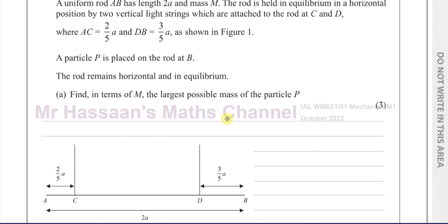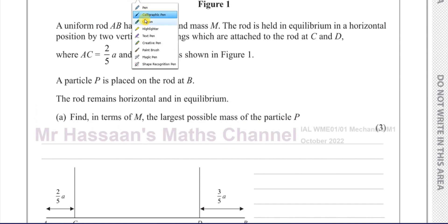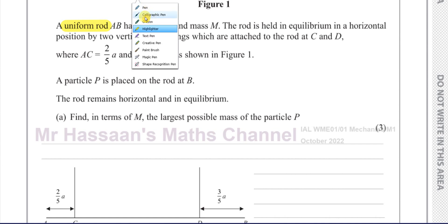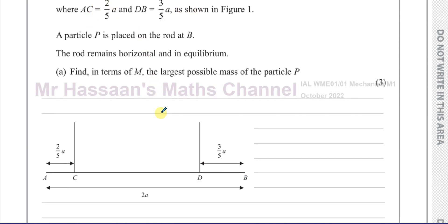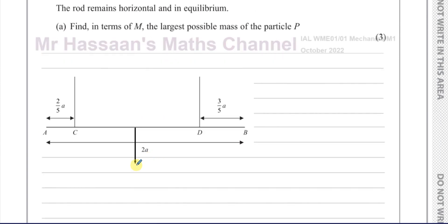So now, it says a uniform rod AB. The word uniform means that its mass is distributed evenly along its length, which means the center of mass can be taken as the geometric center of the rod. That means the weight of the rod acts exactly halfway along its length — exactly 1A along from one end. So the mass is M, and its weight is going to be MG.